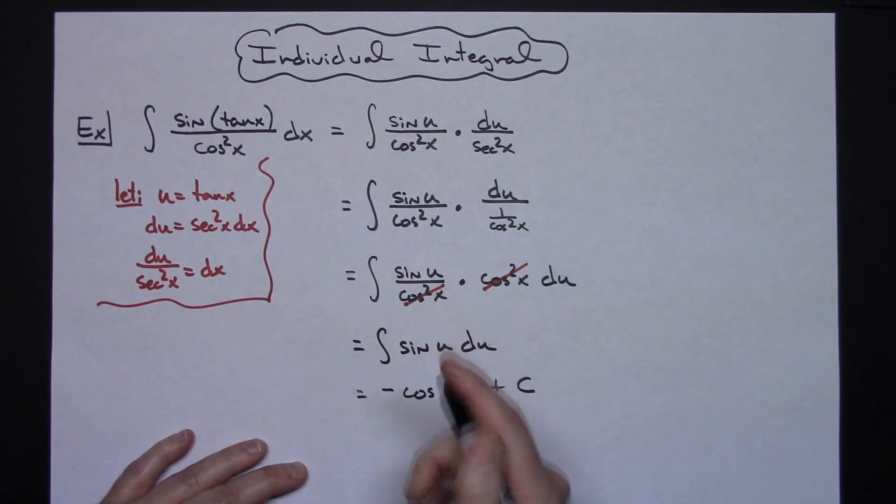And then replacing that u with our tangent, we'll have a negative cosine tangent x plus c, or a final answer.